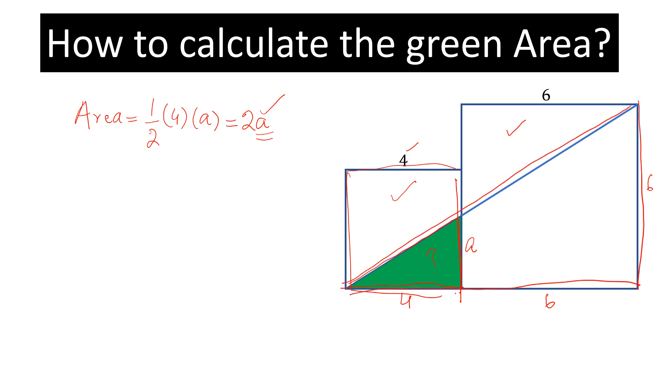These two triangles are similar and the side of this triangle will be 10. So we can write, these two triangles are similar. This green triangle and this big triangle, these are similar.